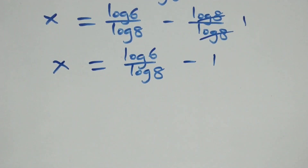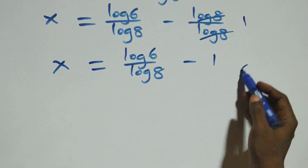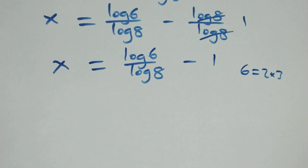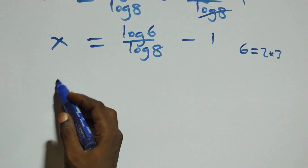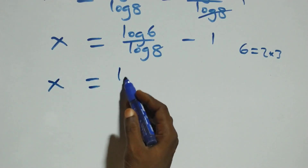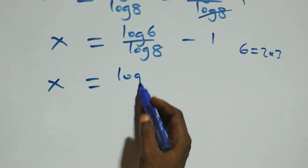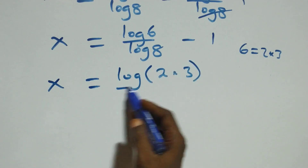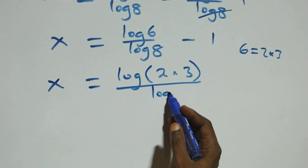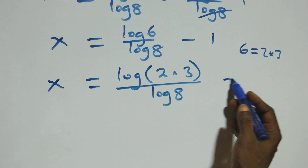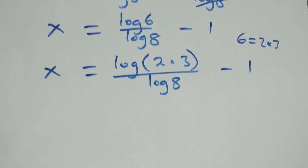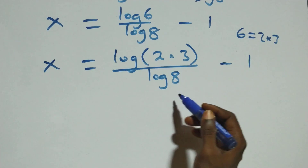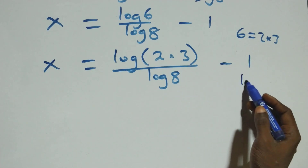Also here, we can write 6 as 2 times 3, which implies we have x now equals log of 2 times 3 over log 8, minus 1.